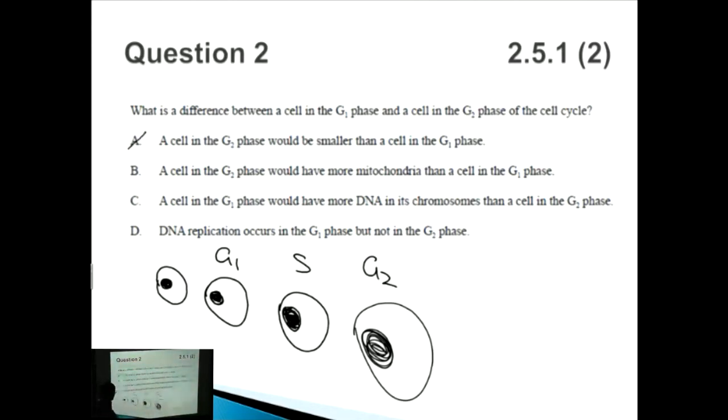B, a cell in the G2 phase would have more mitochondria than a cell in the G1 phase. Well, this could be possible because you have the growth of the cell. But let's consider the other possibilities first. A cell in the G1 phase would have more DNA in its chromosomes than a cell in the G2 phase?